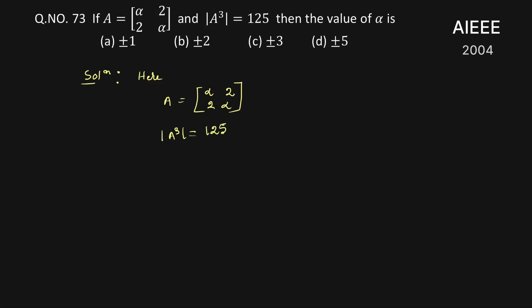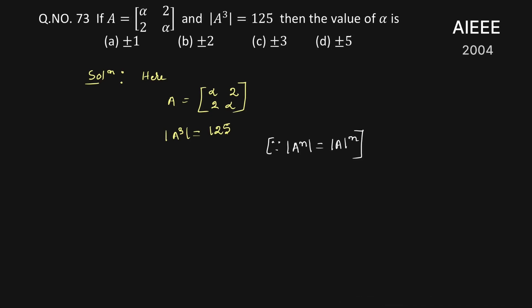So we know that determinant of A to power n we are able to write as determinant A to power n. Therefore this we are able to write as determinant A cube equal to 5 to power cube that is 125. This implies that determinant of A we are able to write 5.